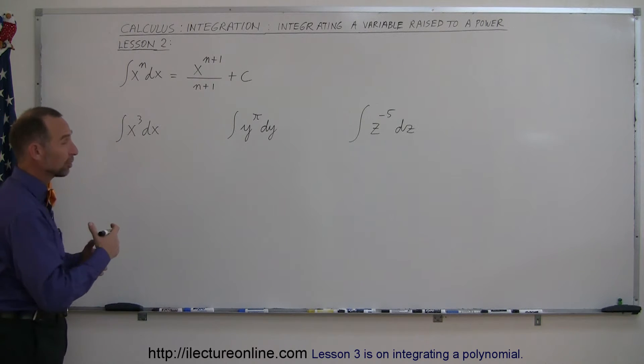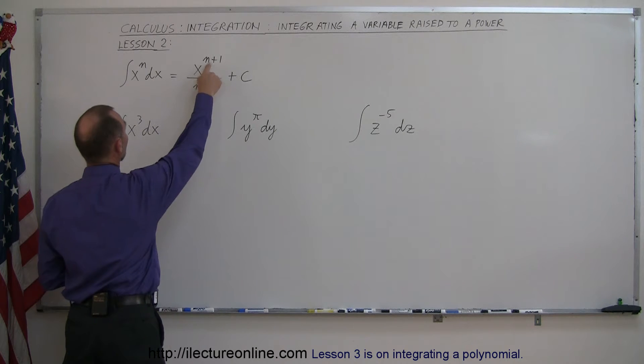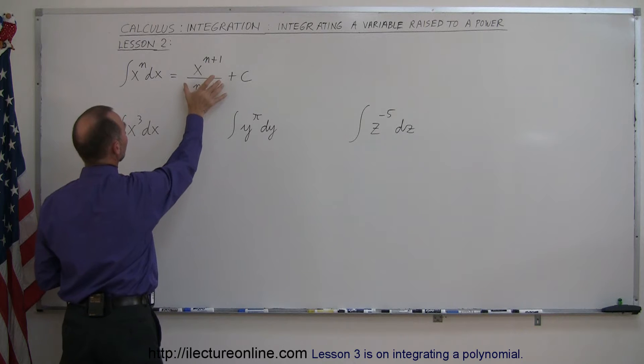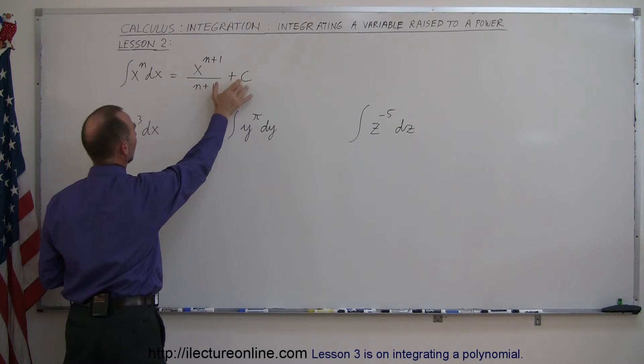For example, x to the n power, where n could be any number. The rule is that when you integrate, you add one to the exponent and divide that by the new exponent, and add a constant of integration.